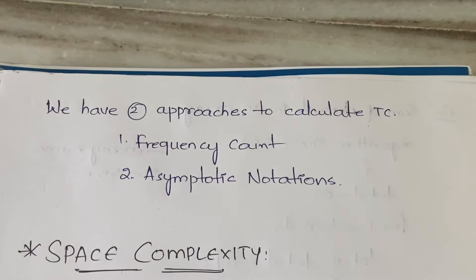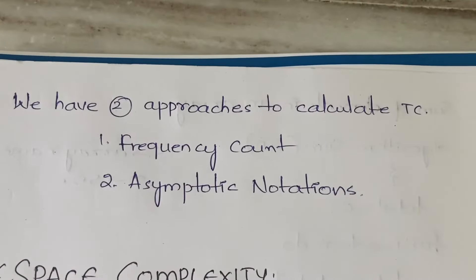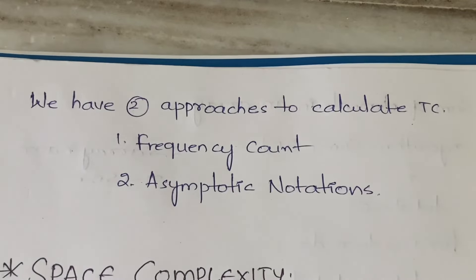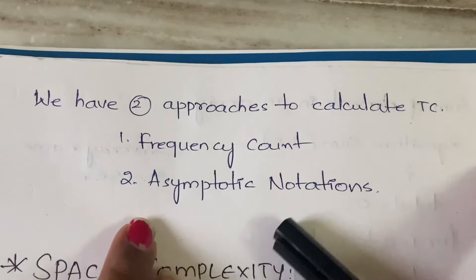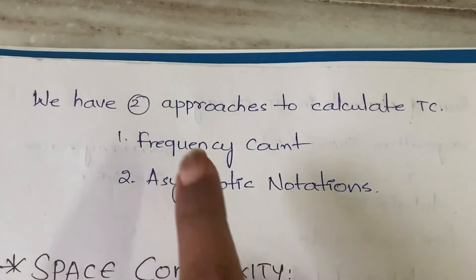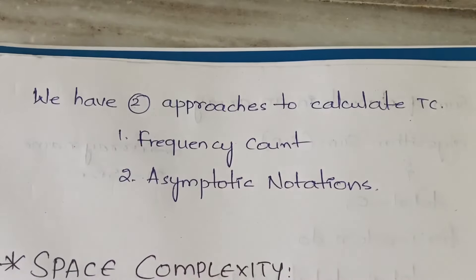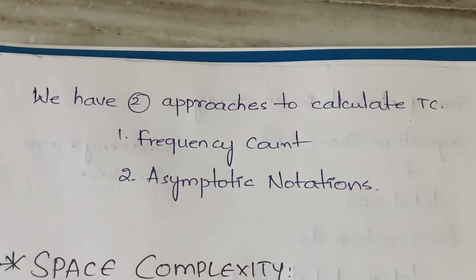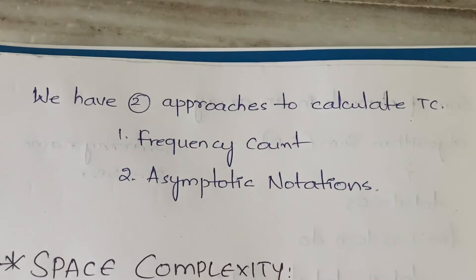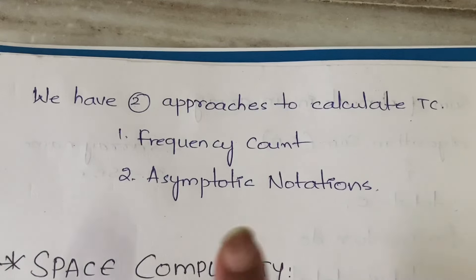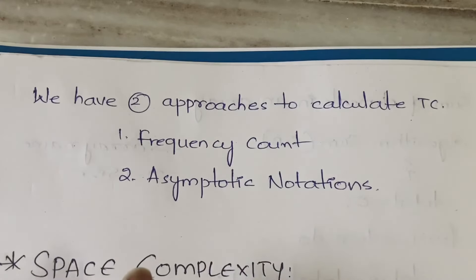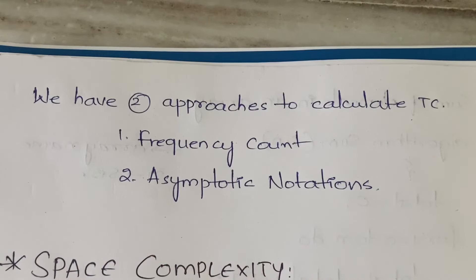There are two approaches to calculate the time complexity of an algorithm: first is frequency count, and second is asymptotic notations. In the next video I will explain space complexity, followed by asymptotic notations.